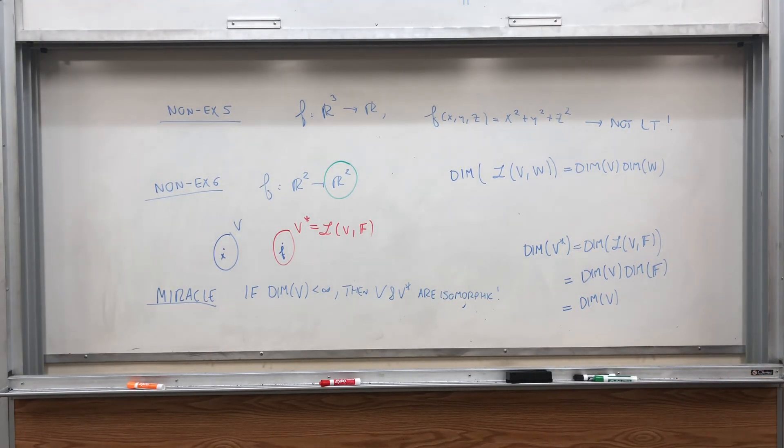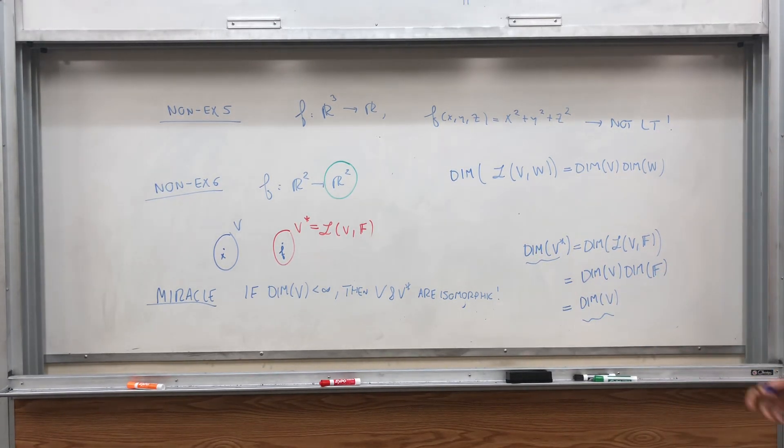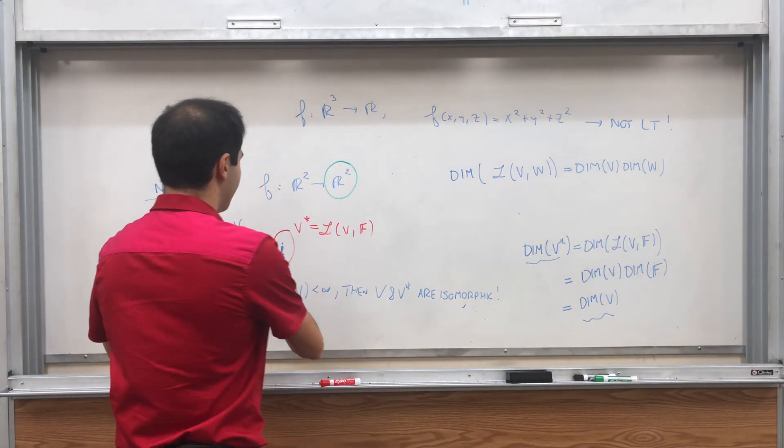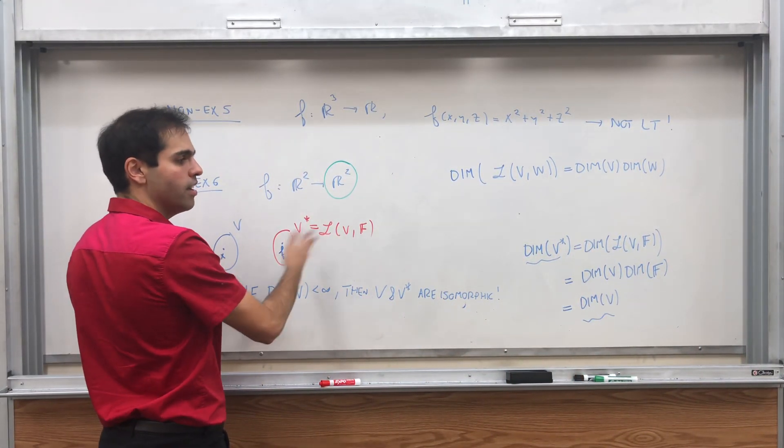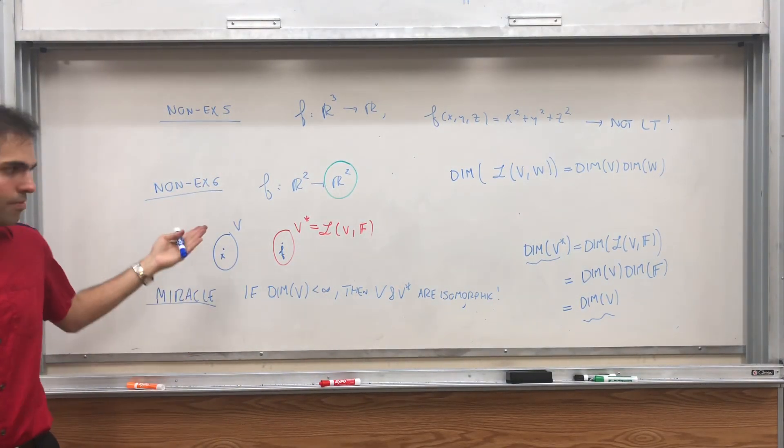And so that's the dimension of V times one, which is the dimension of V. So in particular, V and V star have the same dimension. And there's this theorem I've showed in another video that if you have the same dimension and they're finite dimensional, then they are isomorphic. Therefore, they are like the same.